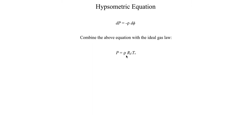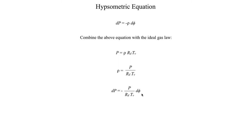If we solve the ideal gas law for density (rho), we get that expression. We can then take this expression for density and plug it into the right-hand side of the hydrostatic balance equation. If we do that substitution, we get that dp is equal to minus pressure over Rd times virtual temperature times dphi — where phi is geopotential. We can rearrange that equation, putting all the p's on one side, which is technically referred to as separation of variables, giving us a differential equation that we can now solve.